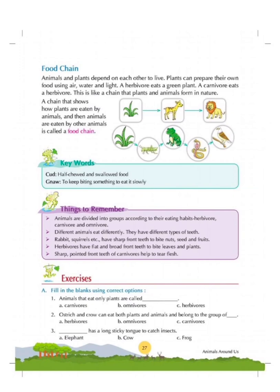Plants and animals depend on each other to live. A plant can prepare its own food using air, water and sunlight, whereas animals depend on plants directly or indirectly. Herbivores eat plant and plant products directly, whereas carnivores feed on animals which in turn feed on plants. There is a chain: first there is a plant, the plant is eaten by a herbivore, and that herbivore is eaten by a carnivore. This transfer of energy from one organism to another is called a food chain.